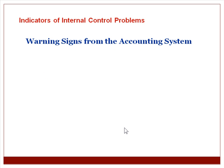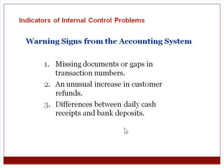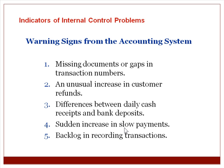There are also warning signs from the accounting system indicating internal control problems: missing documents or gaps in transaction numbers, an unusual increase in customer refunds — which could indicate purchases never really took place — differences between daily cash receipts and bank deposits, a sudden increase in slow payments which might mean someone is siphoning payments off the top, and a backlog in recording transactions.